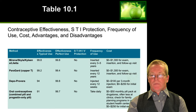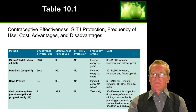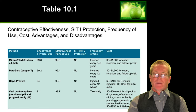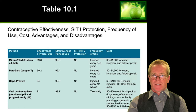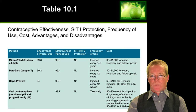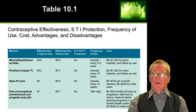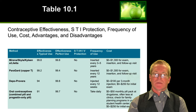Other methods of contraception include things like Mirena and Depo-Provera — these are intrauterine devices that are very effective at preventing pregnancy but don't provide protection from sexually transmitted diseases. Oral contraceptives are also effective at preventing pregnancy but do not prevent sexually transmitted diseases or HIV.